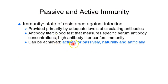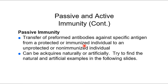Immunity can be achieved actively or passively, and either naturally or artificially. Some medical interventions are an artificial way of conferring immunity. Passive immunity, for example, could be achieved by transferring antibodies — since antibodies are specific, it's for a specific antigen. If we took antibodies from an immune person and put them into someone who's not immune but suffering from a disease, that would be an artificial form of passive immunity.